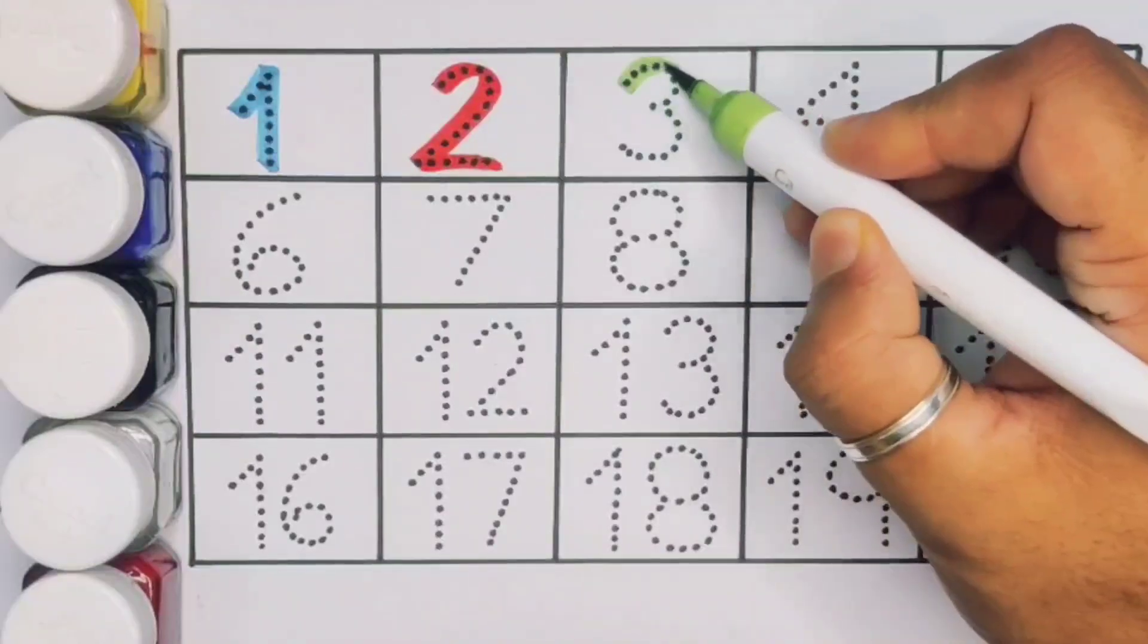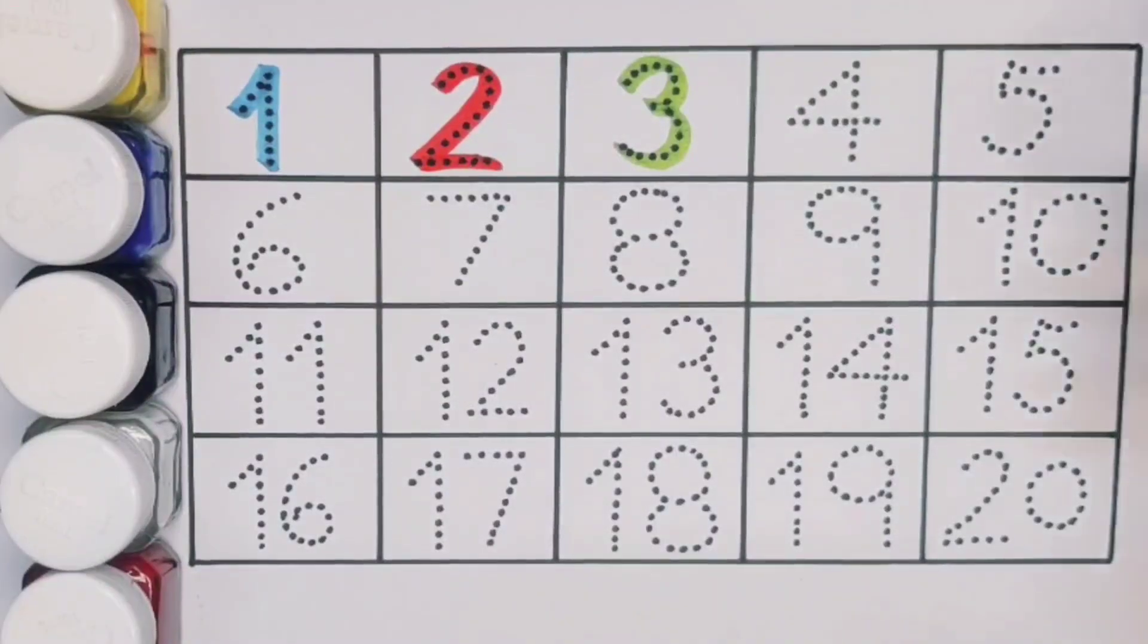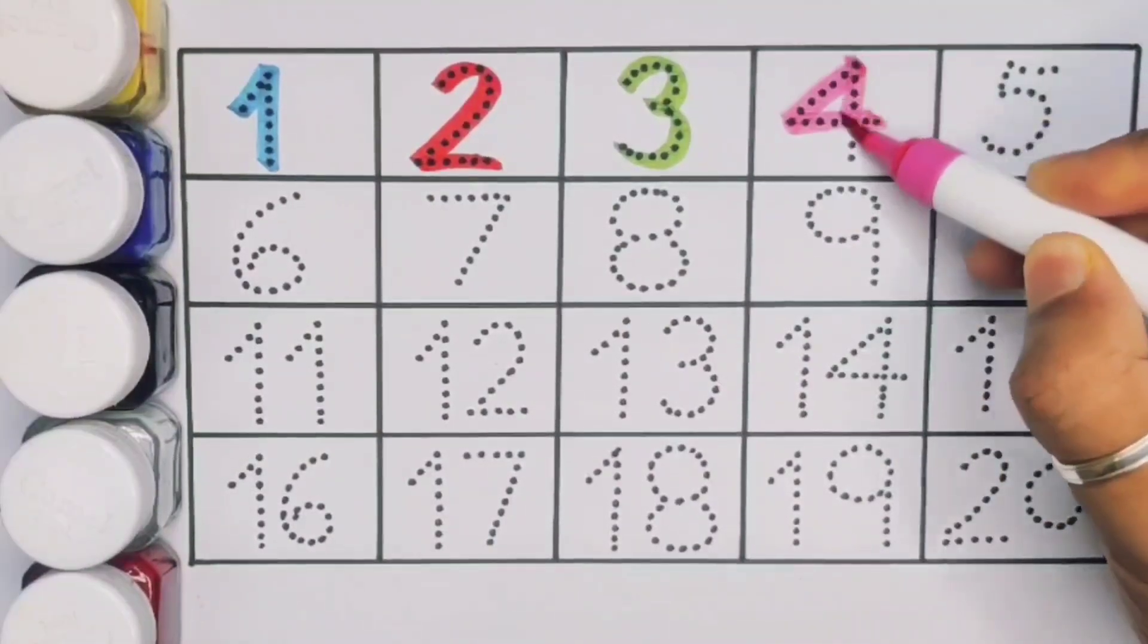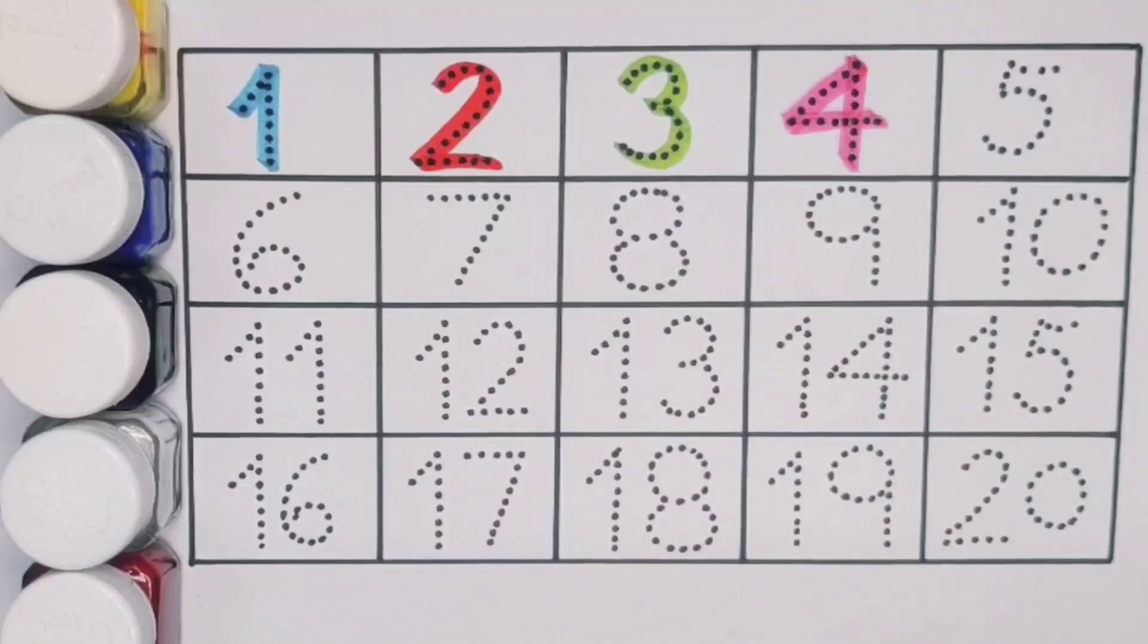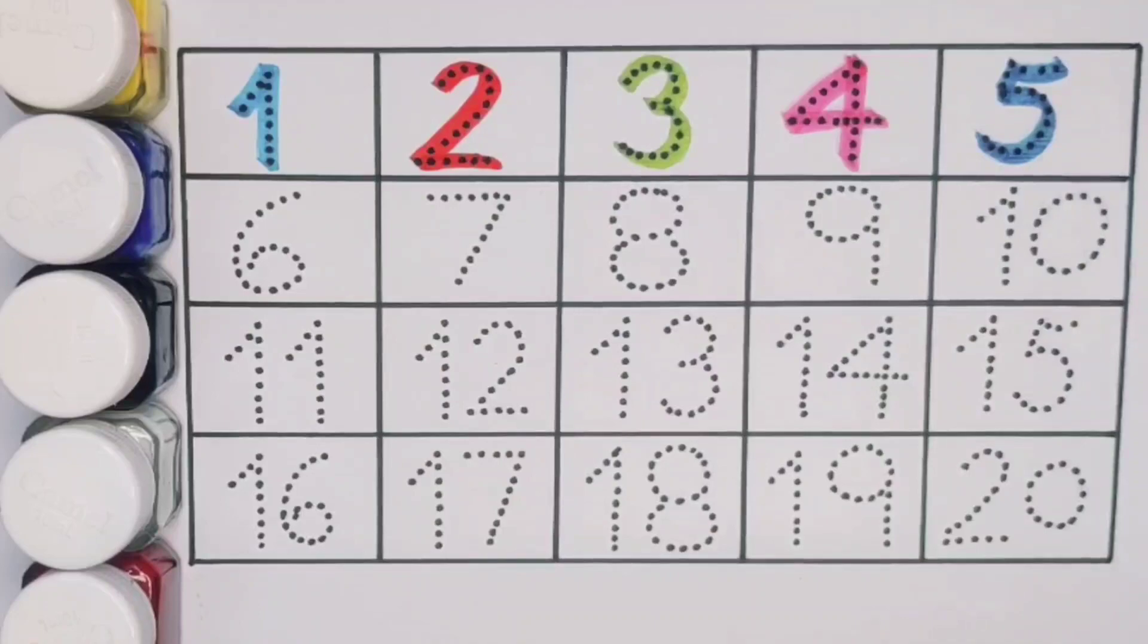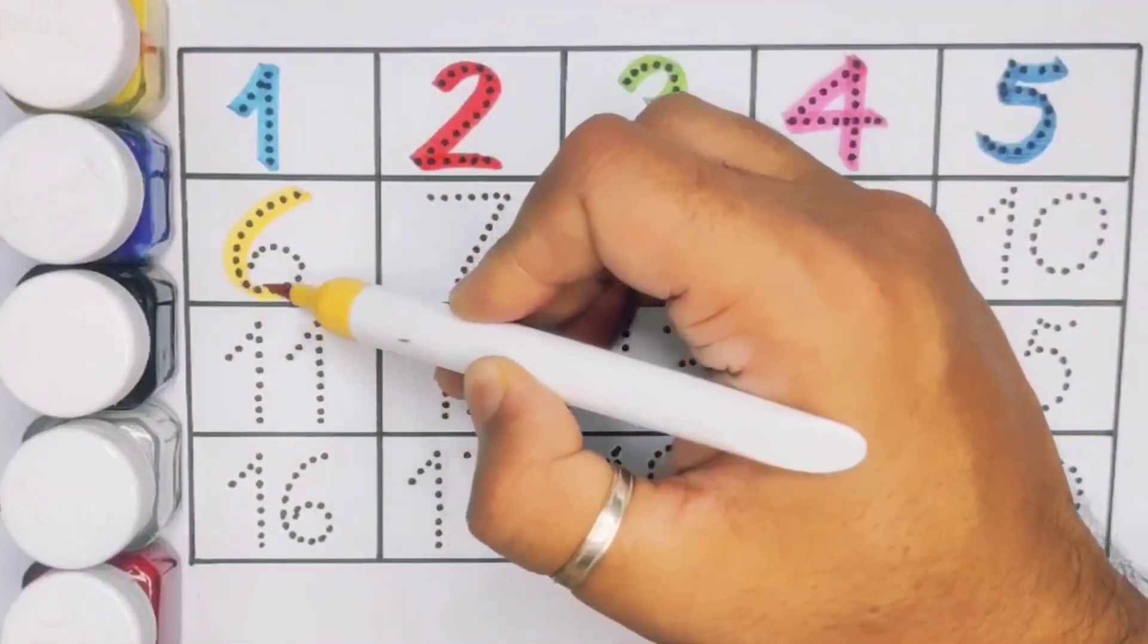Next kids 4, number 4. Next kids 5, number 5. Next 6, number 6.